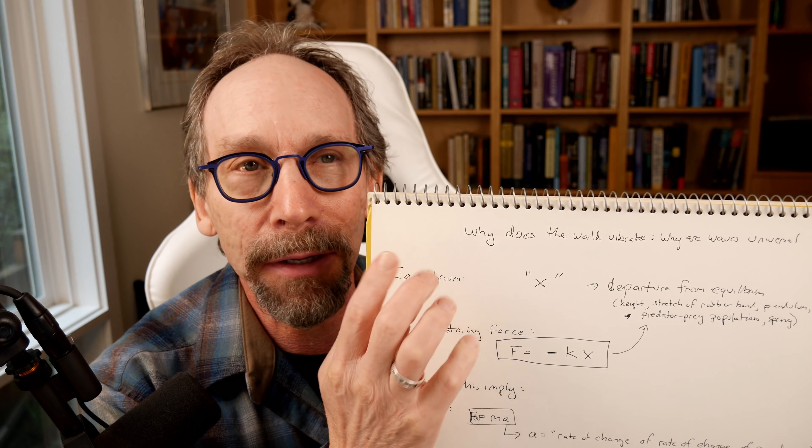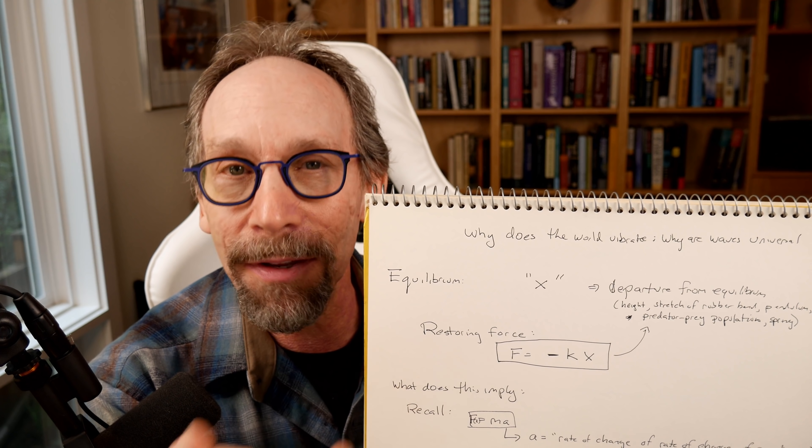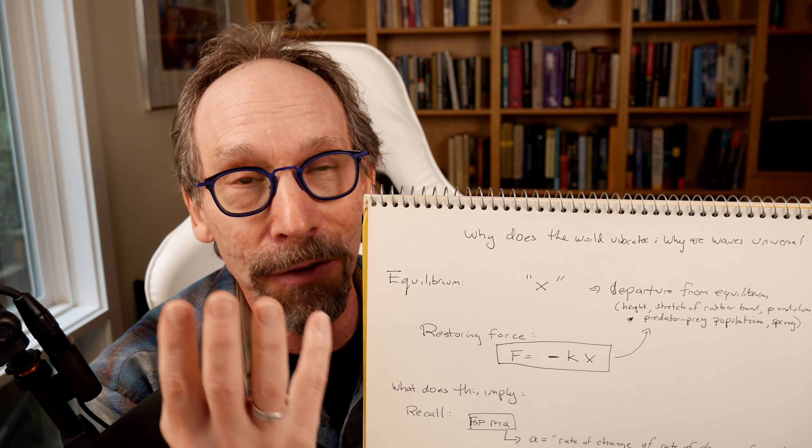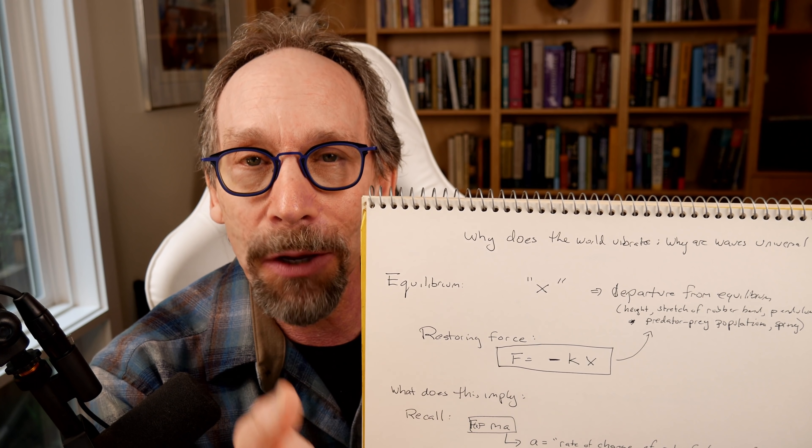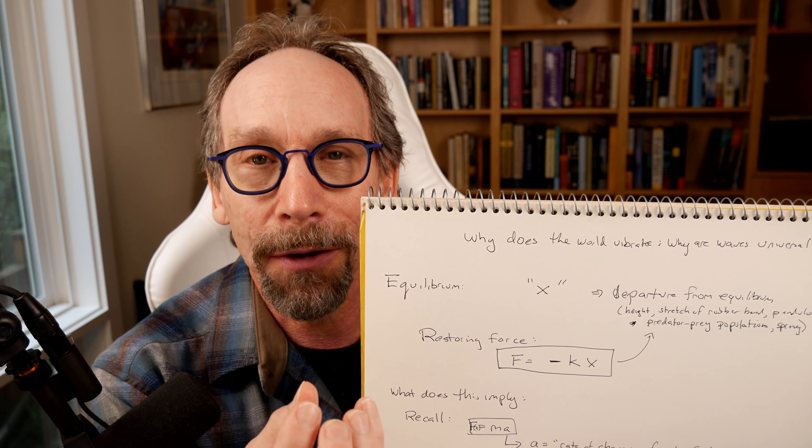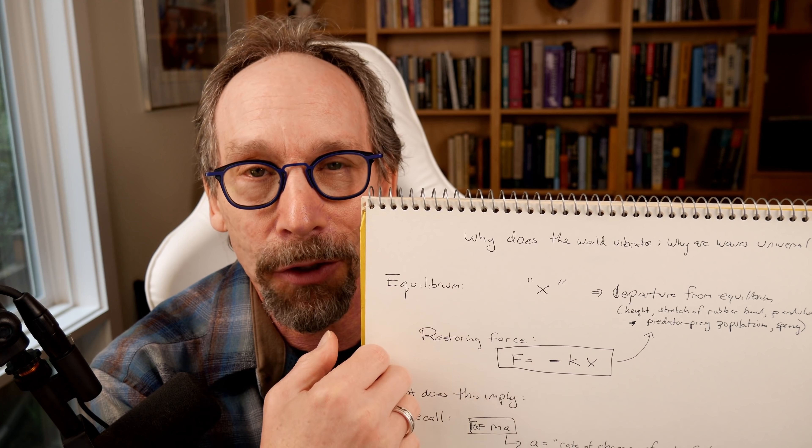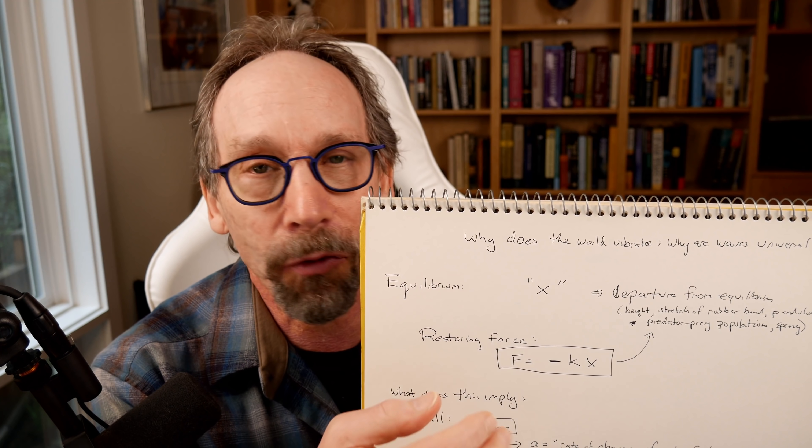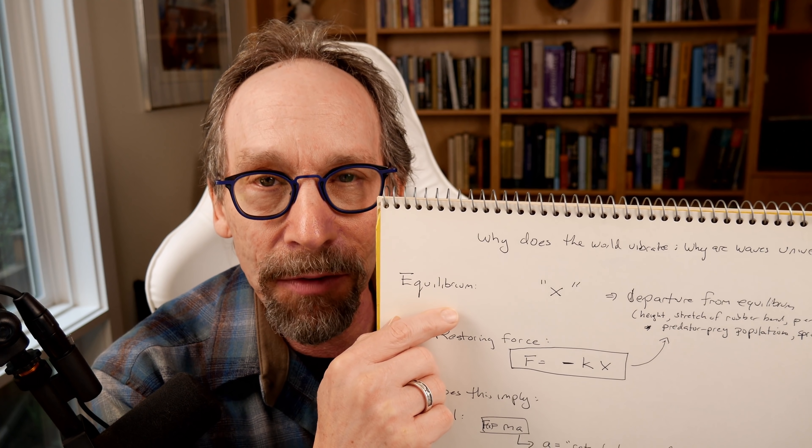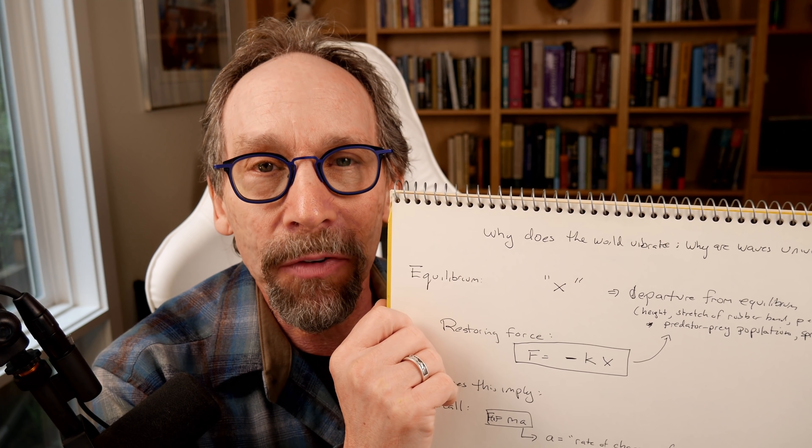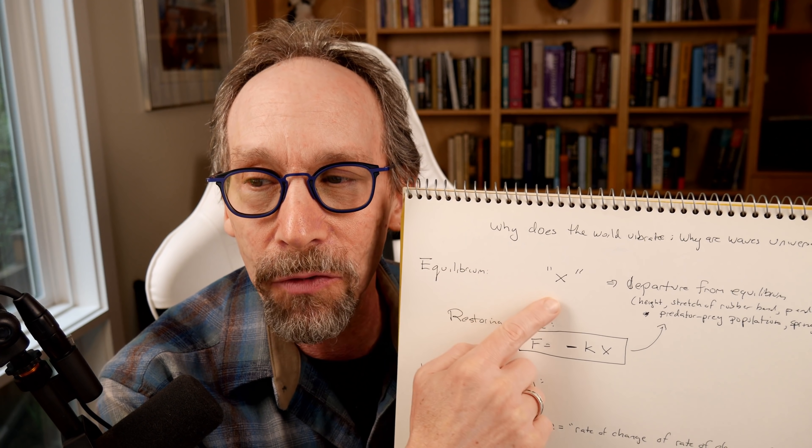So what I want to talk about is why the world vibrates. And the first point is that the world is in equilibrium in the sense that if you make a deviation from an equilibrium position, the world wants to return to that position, that's what equilibrium means. If you don't have such a situation, then you either go into chaos or you rapidly change from where you are. So anytime you're in equilibrium, what that really means is that when you make a departure from equilibrium, there's something that causes the system to return to the situation it was in.